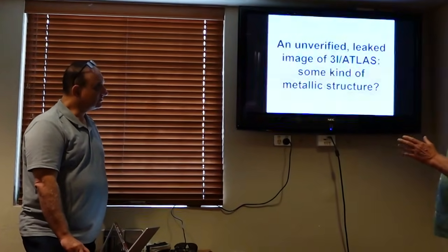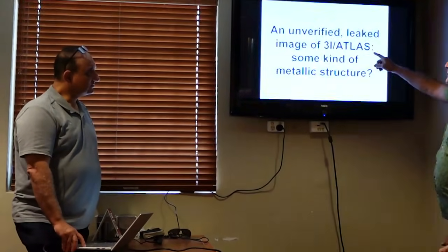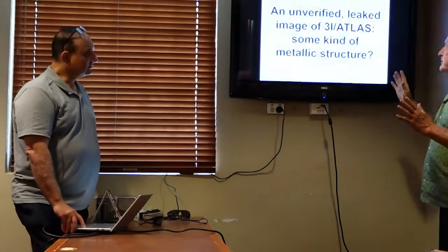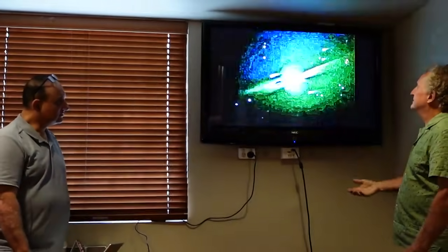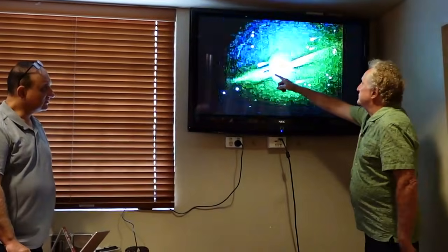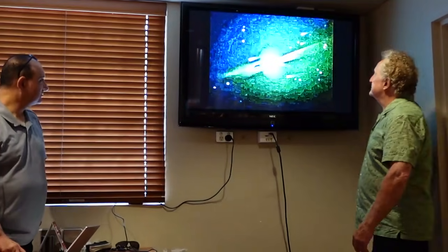Now, a few months ago, before that image, there was a leaked image of 3I Atlas on the internet. And nobody knew whether it was real or not. And do you know what it showed? It looks like it showed some metallic structure in here. It's pretty interesting, isn't it?